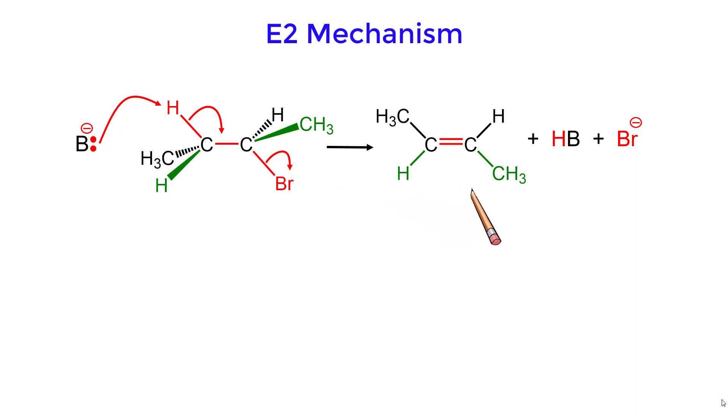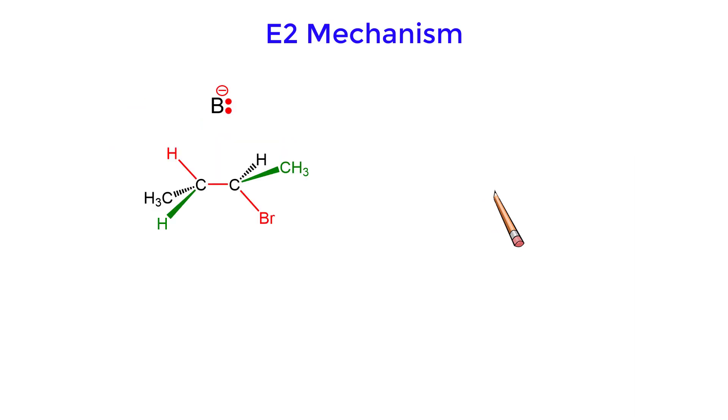But now let's visualize the reaction mechanism as a Newman projection. In the Newman projection, we can see that the hydrogen and bromine are in the same plane, and are anti to each other, or anti-coplanar.